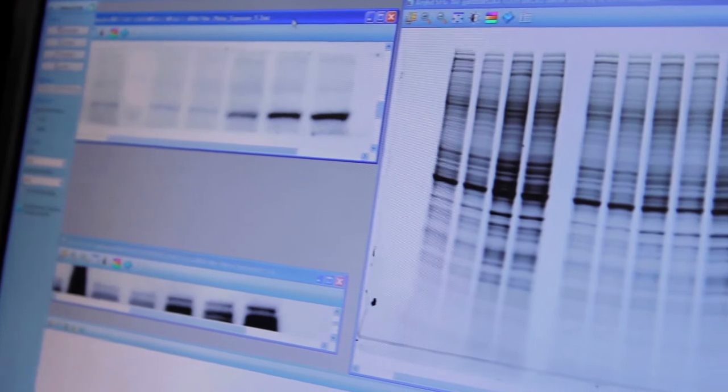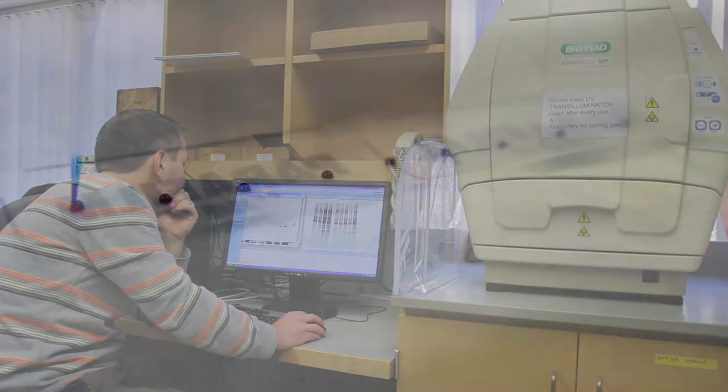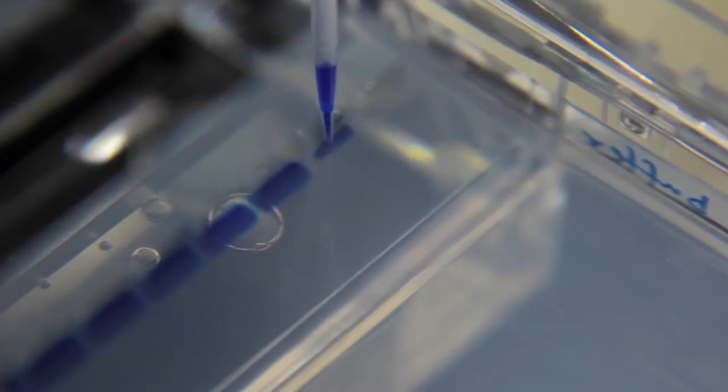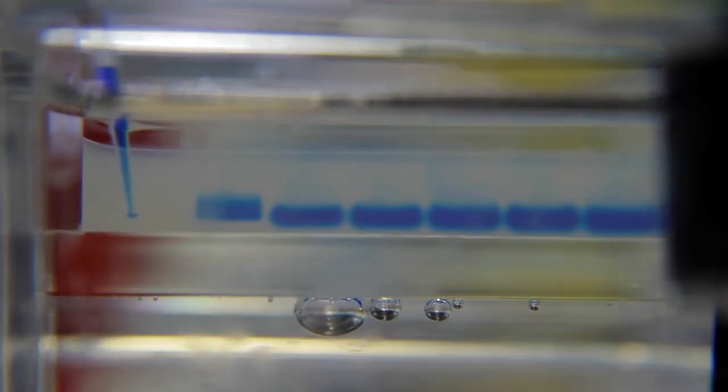One of the things that we really like about the ChemiDoc MP system and using the stain-free gels in conjunction with it is the ability to normalize our western blots to the total protein in every lane that we load. The way that most people normalize their western blots is by these loading controls: tubulin, actin, GAPDH, these are probably the most common.